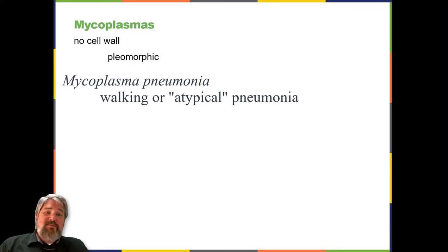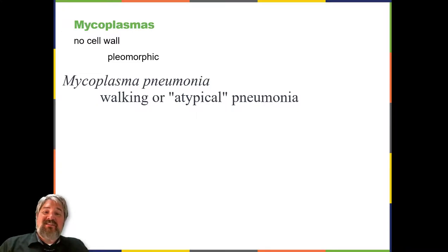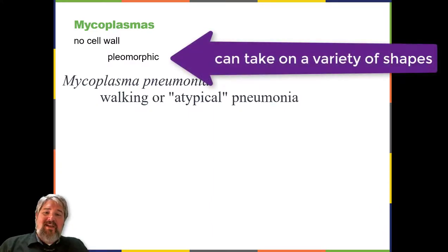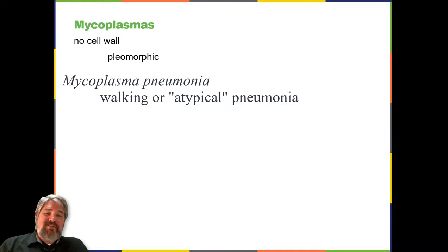Although Mycoplasma species do not possess a cell wall and therefore are not stained by Gram-stain reagents, this genus is still included with the low-GC Gram-positive bacteria. The genus Mycoplasma includes more than 100 species. They are very small cells, some with a diameter of about 0.2 micrometers — smaller than some large viruses. They have no cell walls and therefore are pleomorphic, meaning they may take on a variety of shapes and can resemble very small animal cells. One species, Mycoplasma pneumoniae, causes the mild form of pneumonia known as walking pneumonia or atypical pneumonia.